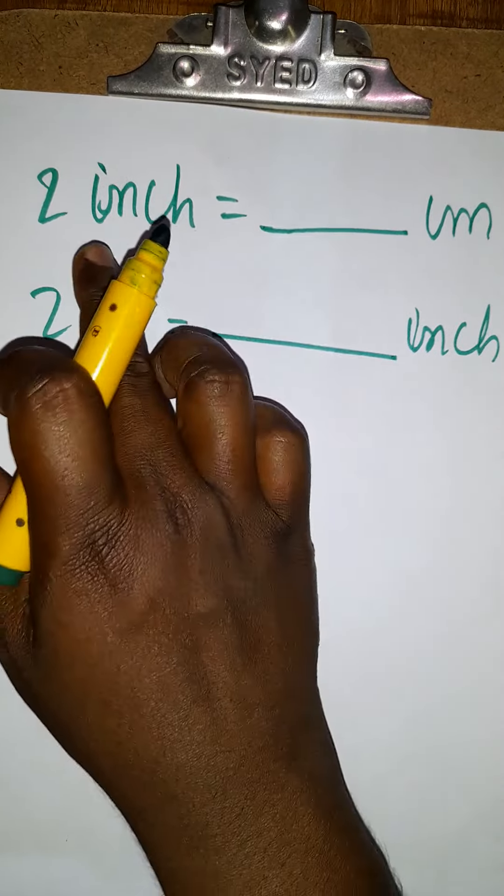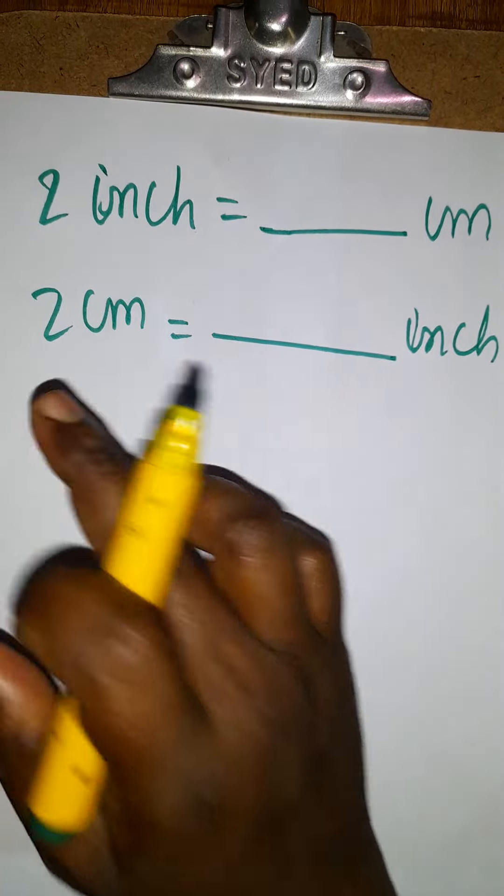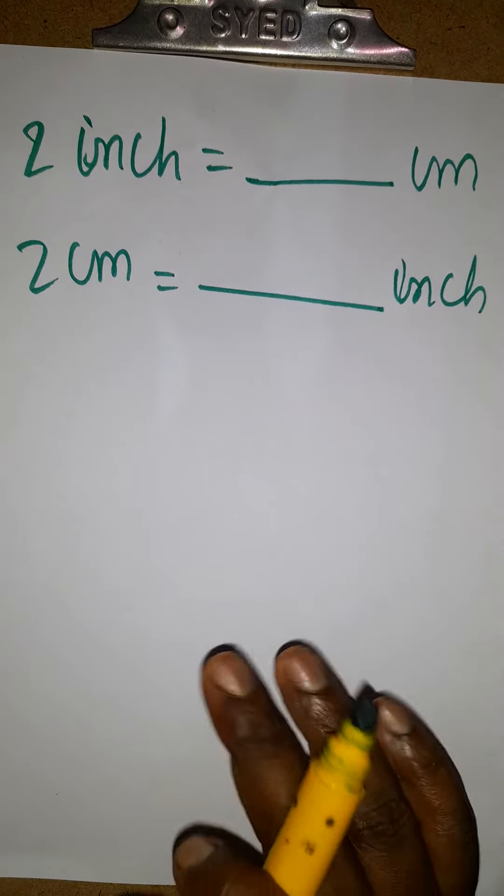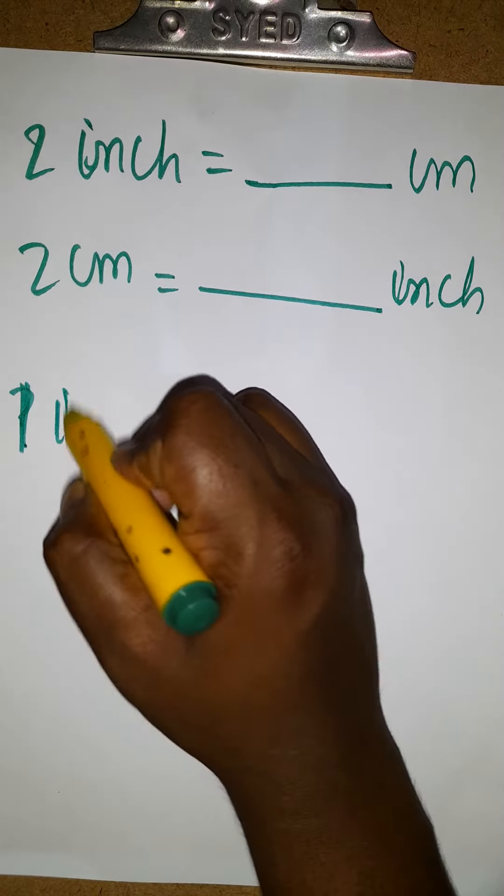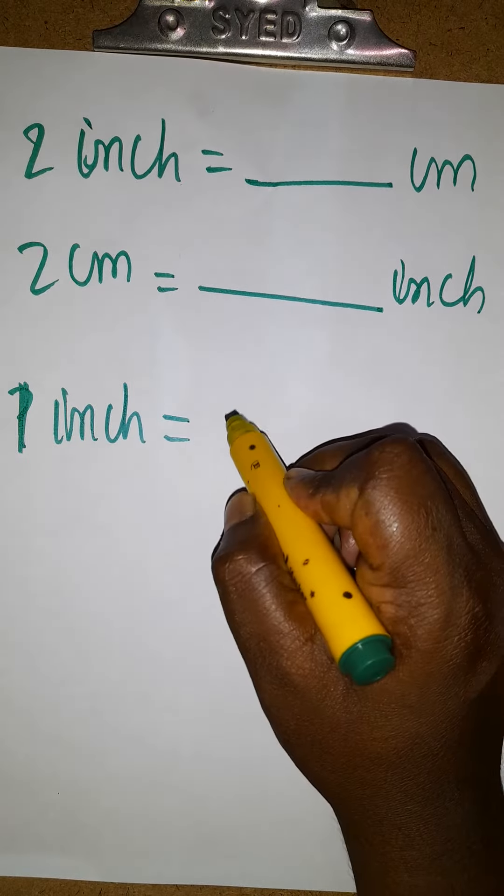Hello student, today we are going to convert 2 inches to centimeters and 2 centimeters to inches. It's very simple. First we will see: one inch is equal to 2.54 centimeters.